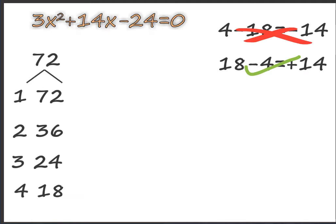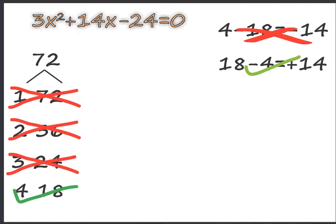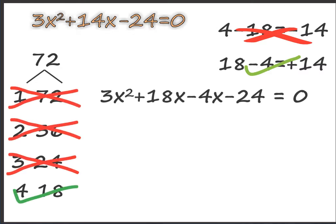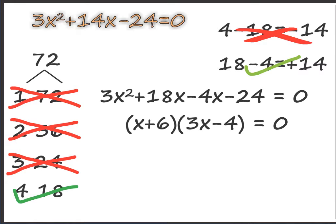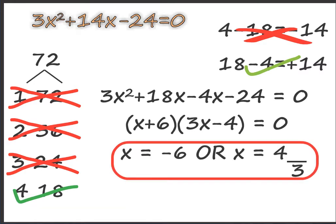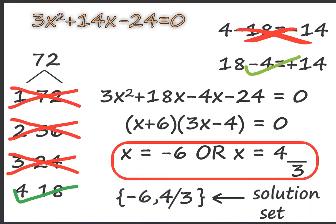Let's look at the factors of 72: 1 and 72, 2 and 36, 3 and 24, 4 and 18. For us 4 and 18 will be most appropriate. Therefore 3x squared plus 18x minus 4x minus 24 equals 0, giving x plus 6 into 3x minus 4 equals 0. Therefore x equals minus 6 or x equals 4 by 3; the solution set is {−6, 4/3}.